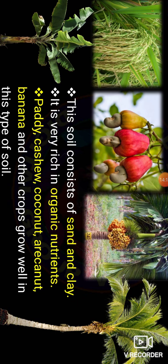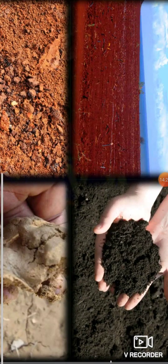So, in the coastal regions, most of the soil is coastal alluvial soil. To summarize, the top thin layer of the earth's surface is called soil. Fertile soil is essential for agriculture. The soils of Karnataka are classified into four types: red soil, black soil, laterite soil, and coastal alluvial soil.